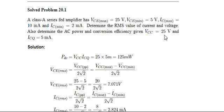VCC is 25 volts, ICQ is 5 milliamps as given. So the input power is VCC into ICQ, which equals 125 milliwatts. Now we have to calculate the AC power.